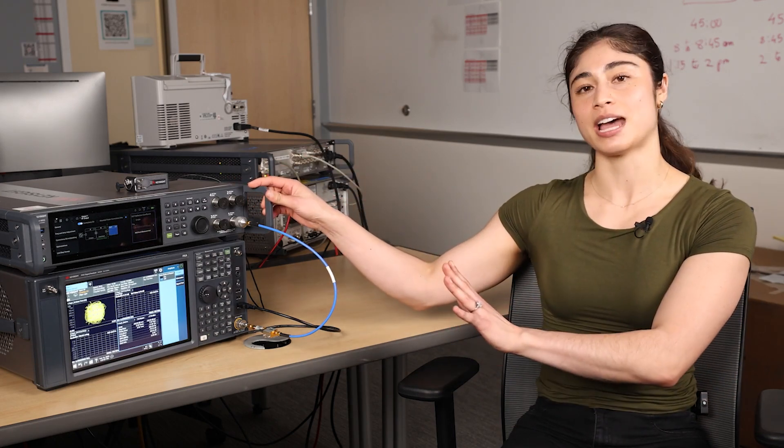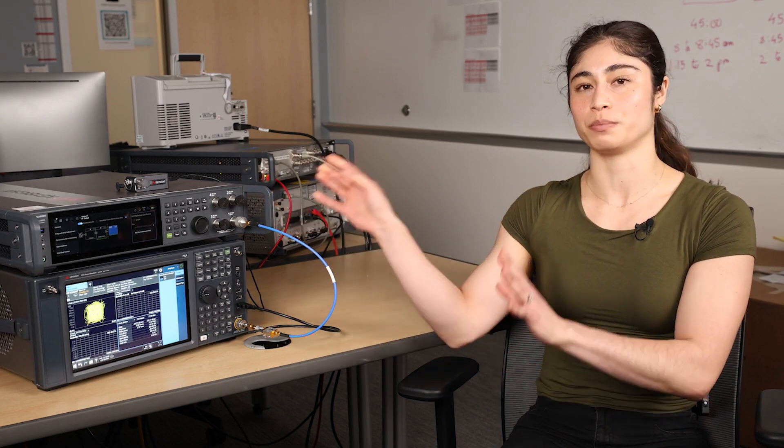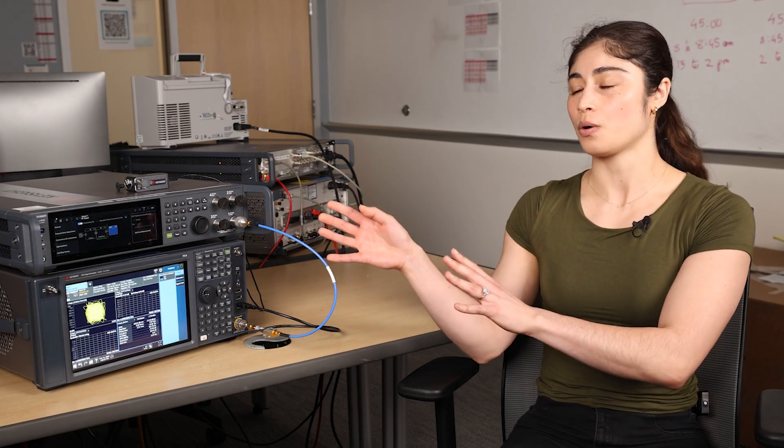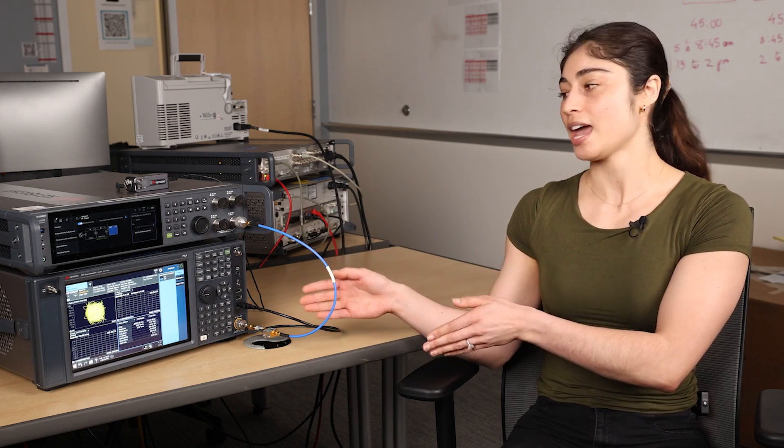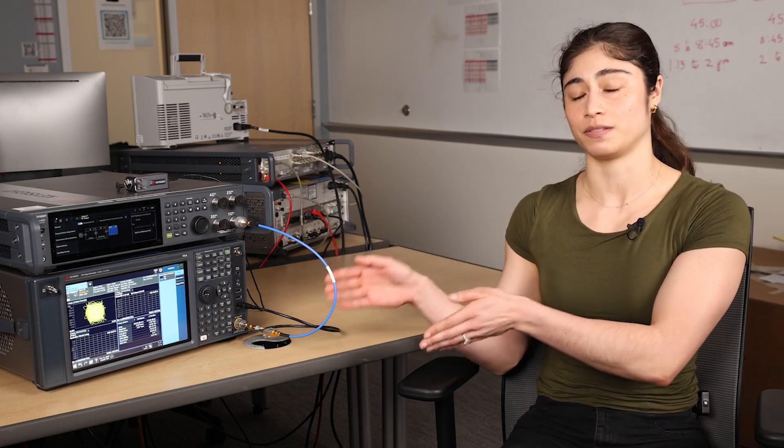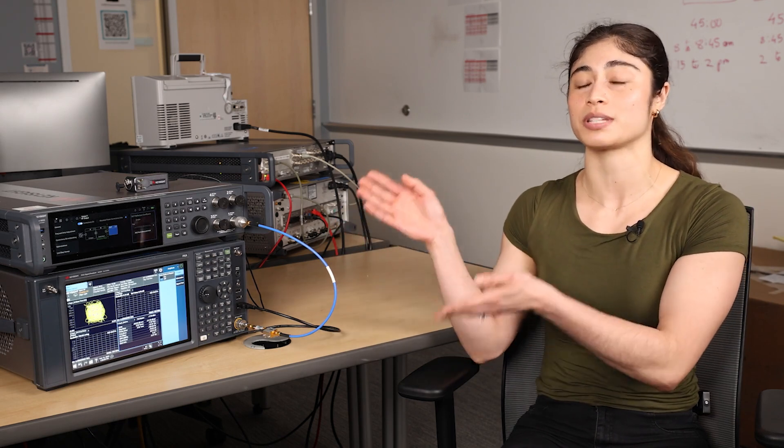First, what is the embedded reflectometer? It is essentially a tool that we embedded into the MXG to help you measure the reflection or the mismatch error from your device under test. And it characterizes the match of the DUT so it can remove those error terms and give you a more accurate measurement.